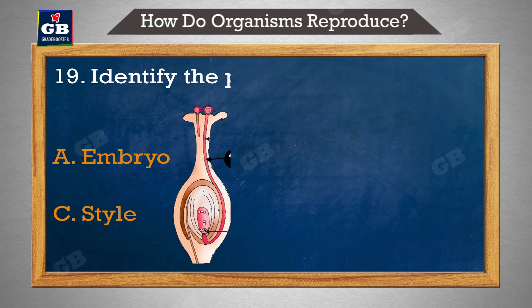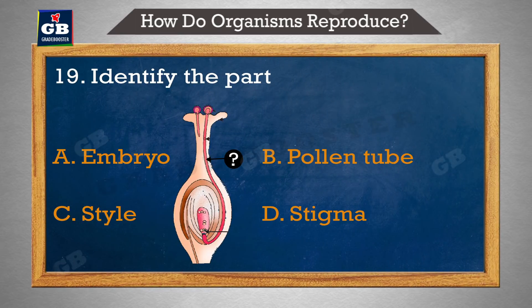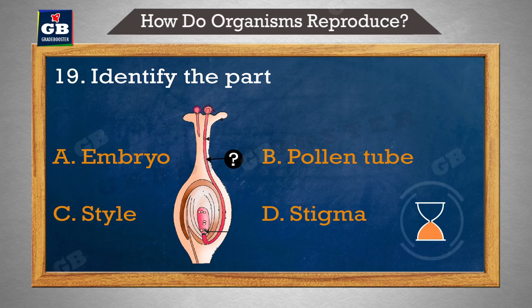Identify the path — bhaag ko pehchaanen. A. Embryo, B. Pollen tube, C. Style, D. Stigma.